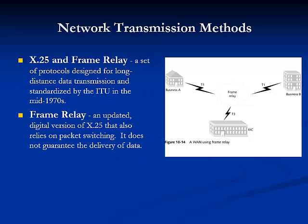X.25 and Frame Relay are packet-switched technologies that rely on the PSTN to deliver data at higher rates than an ordinary telephone line. X.25 is analog, whereas Frame Relay is digital. X.25 guarantees accurate data delivery while Frame Relay does not, making X.25 slower than Frame Relay. Both are economical solutions for WAN links.